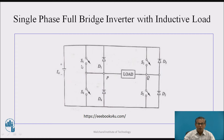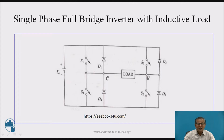When S1 and S2 turn off, the highly inductive load tries to maintain the current in the same direction. Therefore, P becomes negative and Q becomes positive. The stored inductive energy is fed back to the source through diode D3 → source → D4 → back to the load. The direction of current remains the same, but the polarity of the load voltage becomes negative.